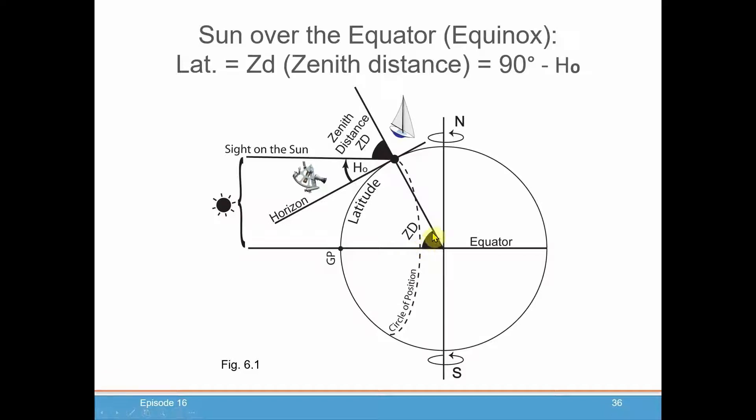So that's why, and if you notice this ZD, it's the same as this ZD, is the same as the angle of the latitude. So that's why on the equinox this is a very simple calculation because the declination is zero, which means that it's on the equator.